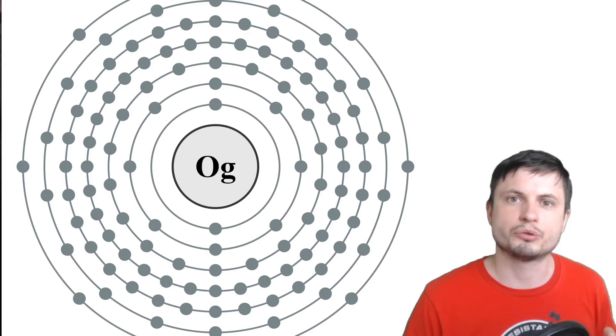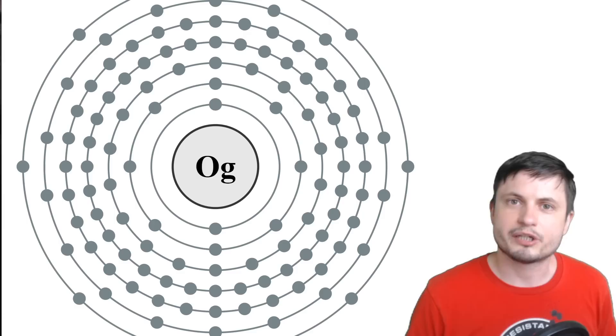we can reach a point where the atom becomes so massive and so compact that it starts acting like quark matter and becomes what's known as UD matter or up-down matter. In other words,